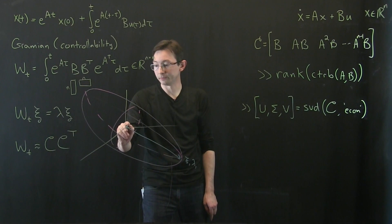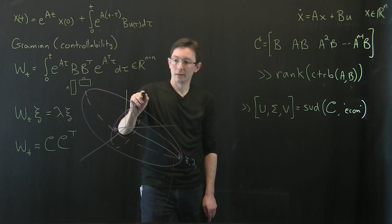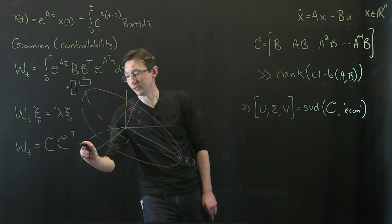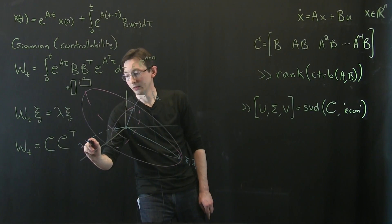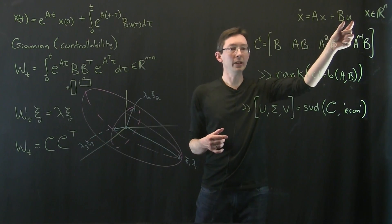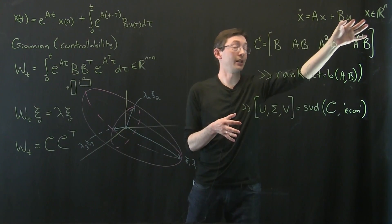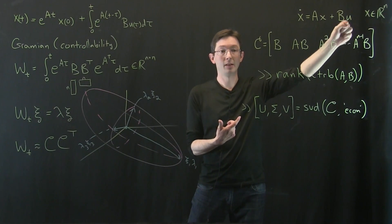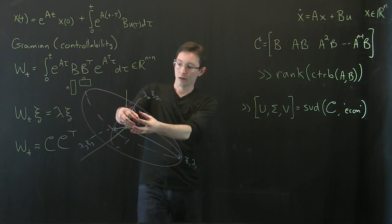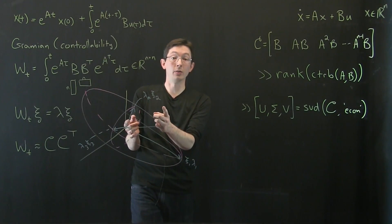So this is lambda1, xi1. This might be lambda2, xi2. And this one might be lambda3, xi3. And what this means is that for a unit of input energy, let's say I've got one gallon of gas, I've got one unit of energy I can input. So if I norm u of t and it equals one, this is literally how, this is the surface of how far I can go in any direction.